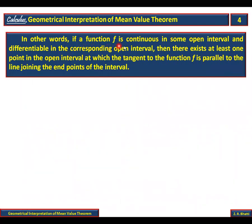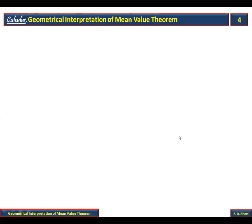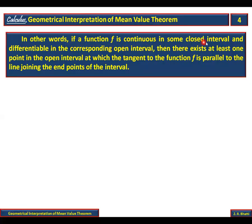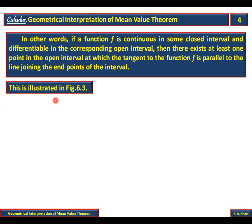In other words, if a function f is continuous on some closed interval and differentiable on the corresponding open interval, then there exists at least one point in the open interval at which the tangent to the function f is parallel to the line joining the end points of the interval. This is illustrated in Figure 6.3.